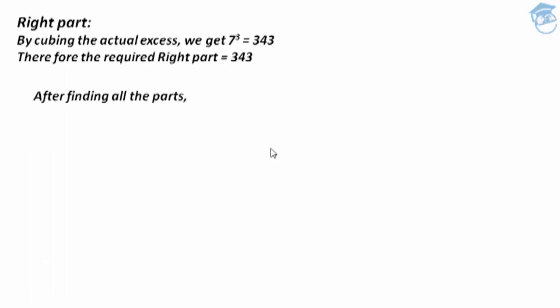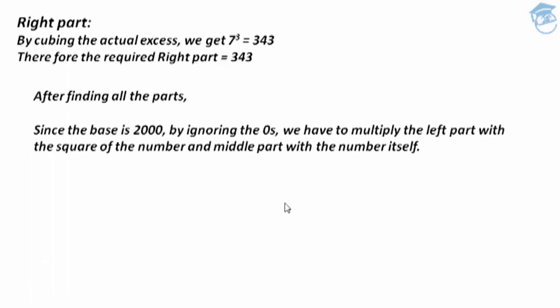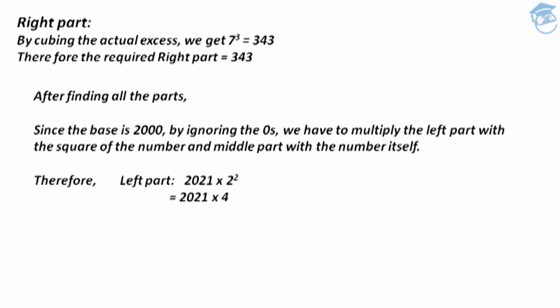Now after finding all the parts, since the base is 2000, by ignoring all the zeros in 2000, we have to multiply the left part with 2 squared and the middle part with 2 itself. So the left part becomes 2021 × 4 = 8084, and the middle part becomes 147 × 2 = 294.